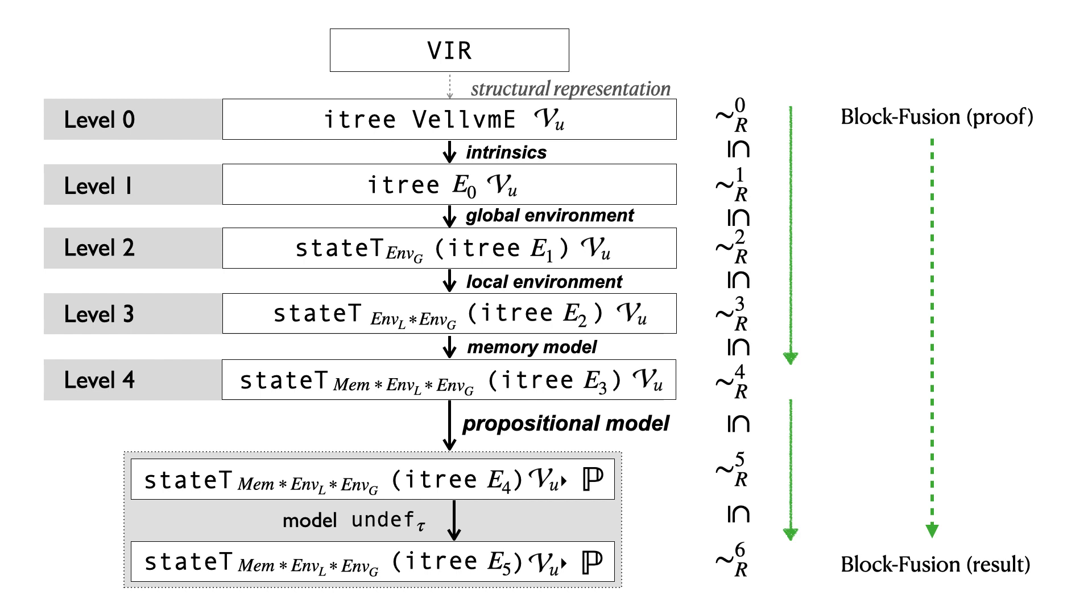Interestingly, the block fission proof does not depend on the state at all, truly in terms of the control flow, and it can be established at the various first level before giving any semantics of the state events, and therefore before introducing any concrete state. However, because of this stack of inclusion, the result can be transported all the way down.